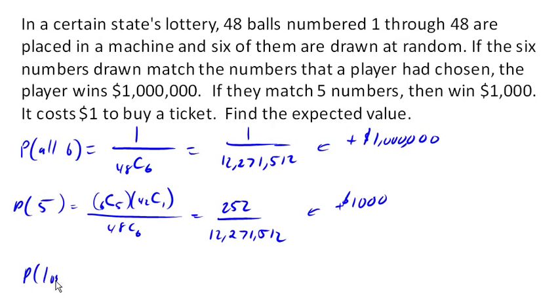Which is gonna happen the rest of the time, right? So 1 minus the 253 out of 12,271,512. And this has a value of negative $1, because it costs $1 to play.